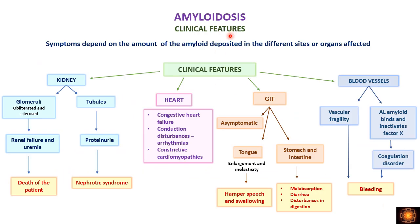Clinical features depend on which organ is involved. If the kidney is involved and the glomeruli are obliterated or sclerosed, the patient will develop renal failure, uremia, and death. If peritubular deposition predominates, the patient will have proteinuria leading to nephrotic syndrome. If the heart is involved, the patient can have congestive heart failure or conduction disturbances such as arrhythmia due to subendocardial deposition, or constrictive cardiomyopathy.